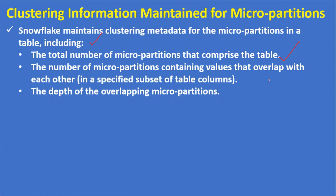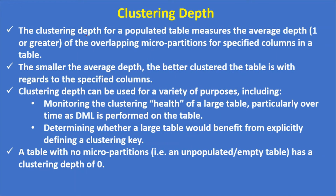The clustering depth for a populated table measures the average depth of one or greater of the overlapping micro-partitions per specified columns in a table. If there is an overlap, the smaller the average depth, the better clustered that table is with regard to the specified columns.